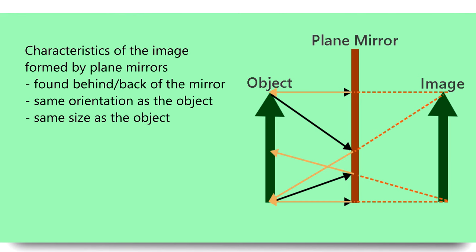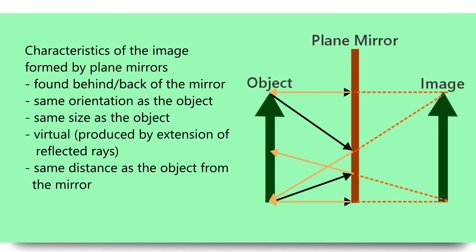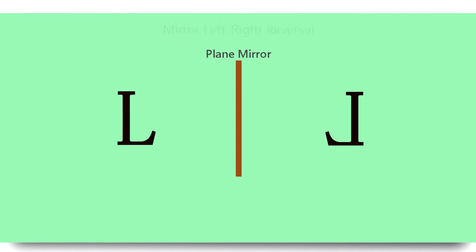The size of the image is the same as the size of the object. The image is virtual — a virtual image is formed by extending the reflected rays, which means the reflected rays do not really meet. The distance of the image from the mirror is the same as the distance of the object from the mirror. For example, if an object is 1 meter from the mirror, the image is also 1 meter from the mirror.